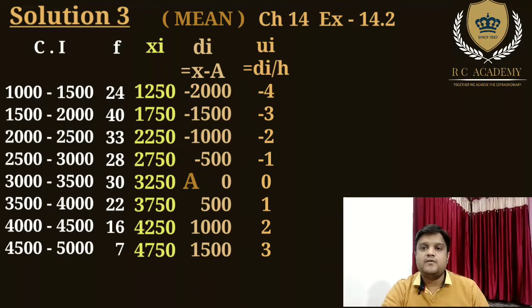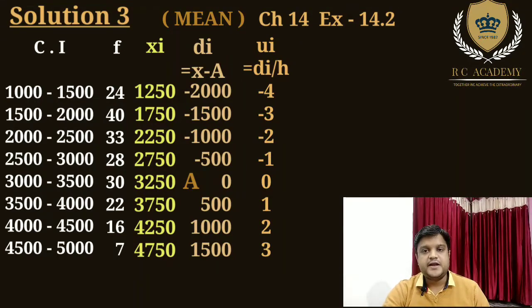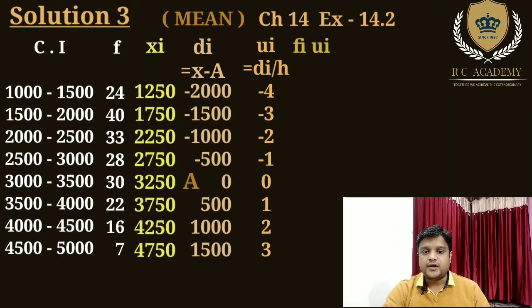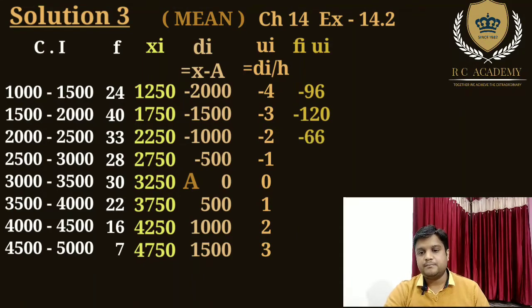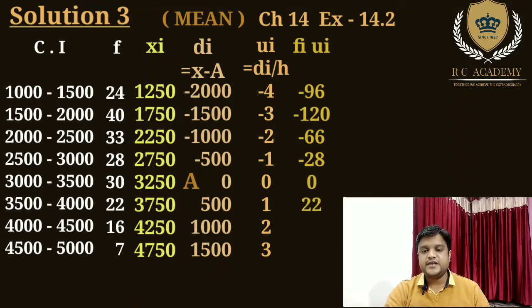Is ui ko hum frequency (fi) se multiply karenge. After multiplying: 24 × (-4) = -96; 40 × (-3) = -120; 33 × (-2) = -66; 28 × (-1) = -28; 30 × 0 = 0; 22 × 1 = 22; 16 × 2 = 32; 7 × 3 = 21.